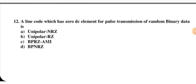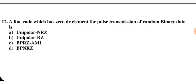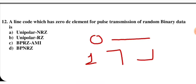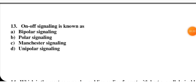A line code which has zero DC element for pulse transmission of random binary data — what does this mean? If the bit is 0, the DC element is zero. For random data (1s), randomly positive or randomly negative pulses are transmitted. This corresponds to bipolar AMI, so C is the correct option.